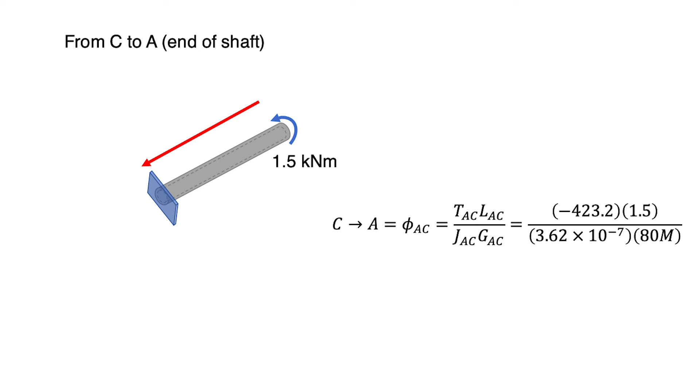We calculate the angle of twist. We cannot use T as 1.5 kNm, but we use the value of internal torque of section AC, which is -423.2 Nm. And we get φAC = -21.9 radians or -1256 degrees. The negative value represents the angle produced from the applied torque is opposite to the right-hand rule. The value of angle of twist is so huge number. Never mind, it is just a mistake from the question.